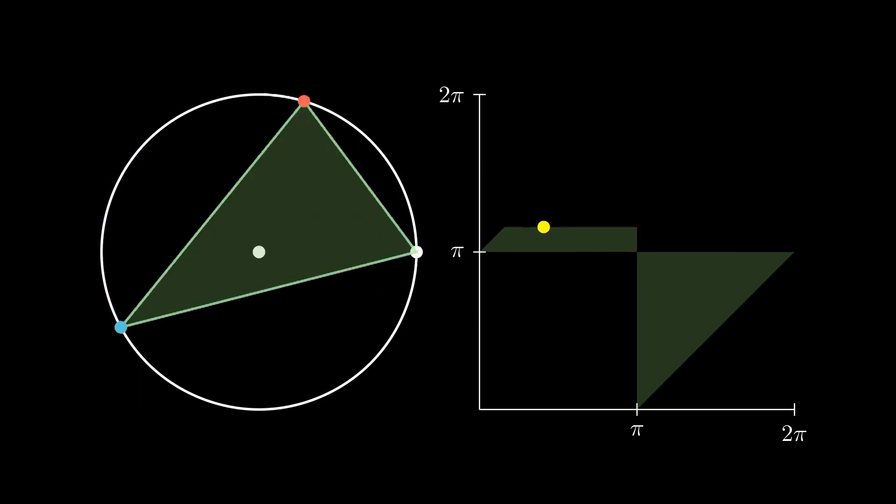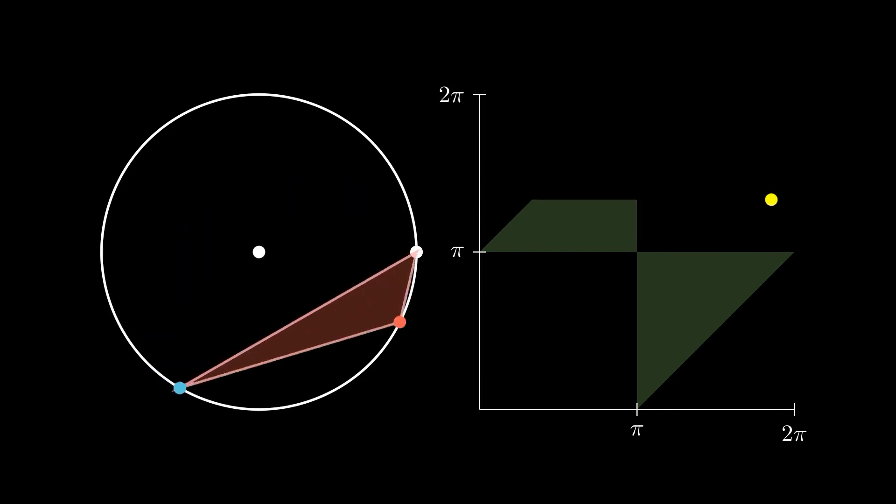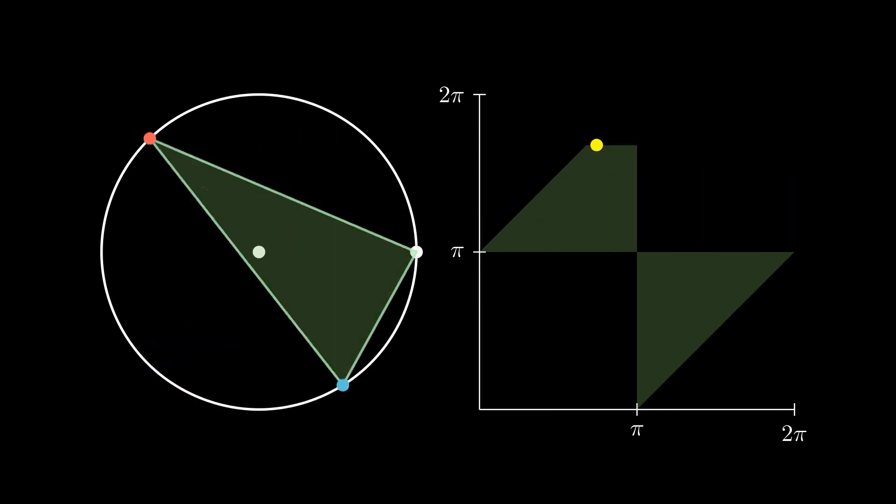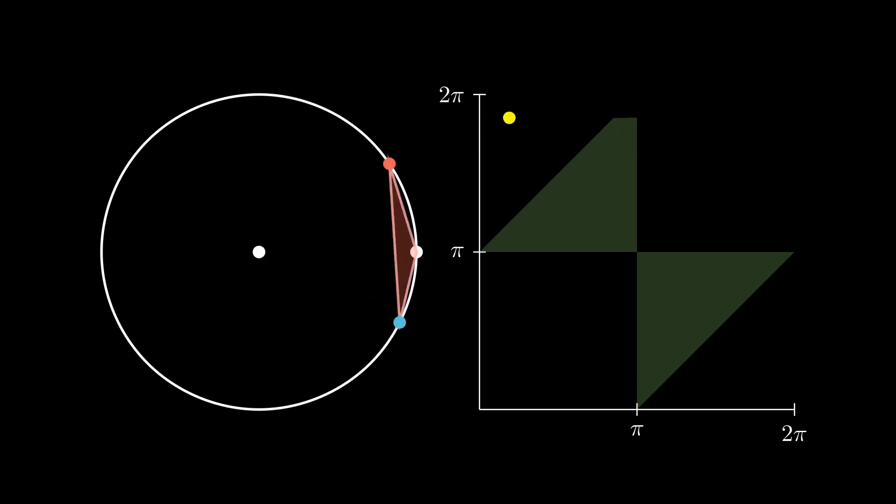That forms a shape covering 25% of the square. Therefore, the probability of success is 1 over 4. It is not an elegant solution, but my goal is to show you what a straightforward solution looks like.